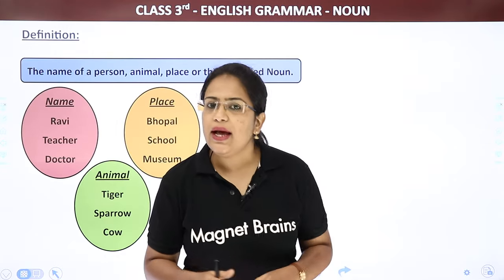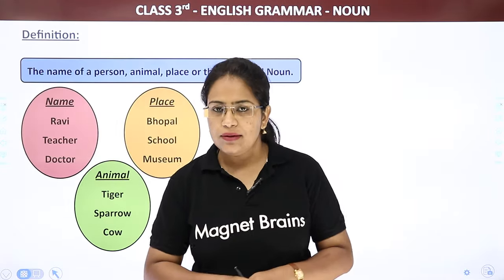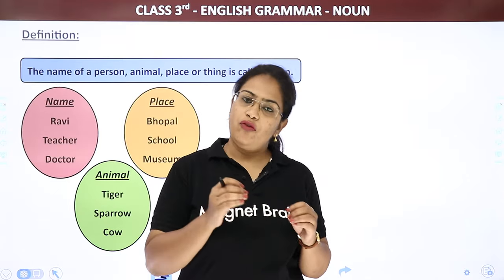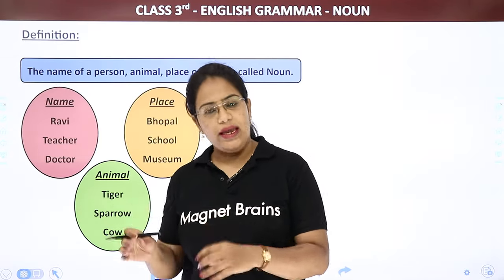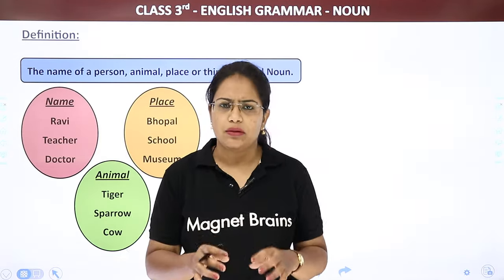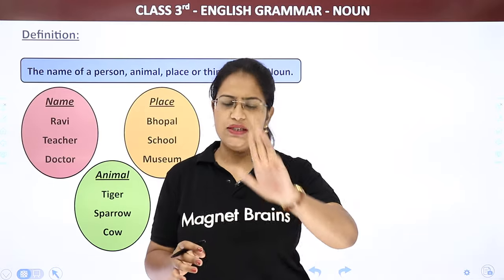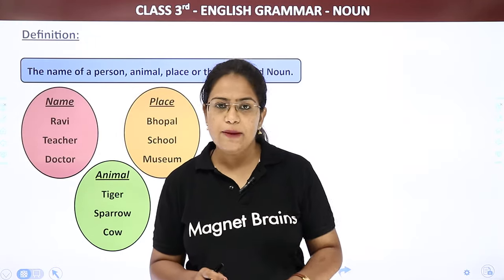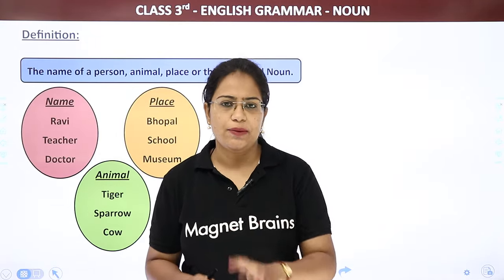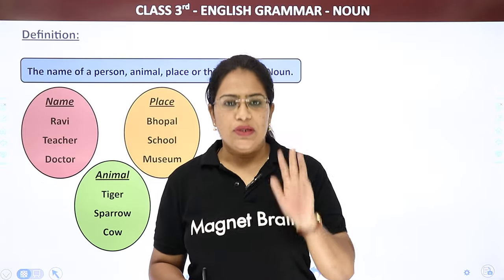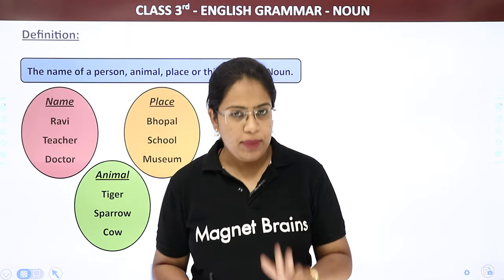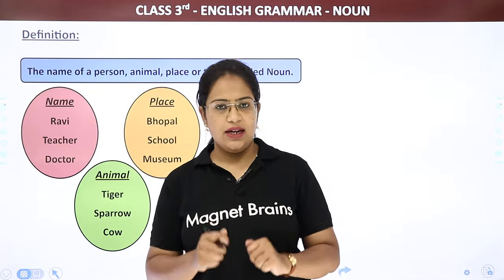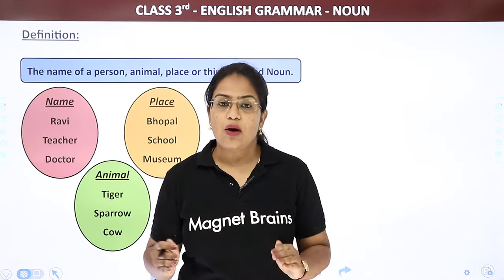So what is a noun? A noun is the name of a person, place, thing, or animal. Person, place, thing, or animal — four things. That's noun.